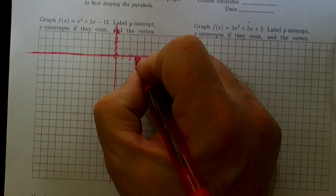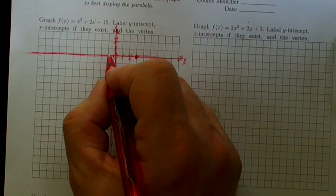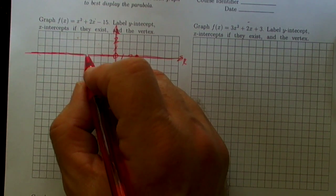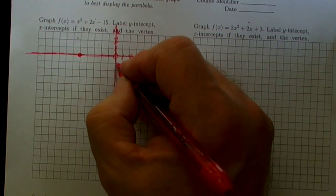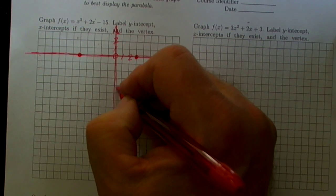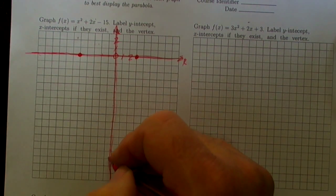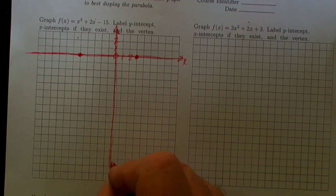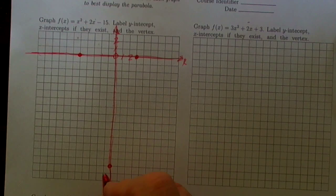So now I can plot my points. There's (3, 0) the point that we found. And (-5, 0). We had found this y-intercept down at (0, -15). That's the y-intercept.